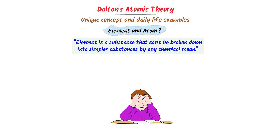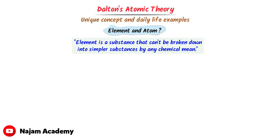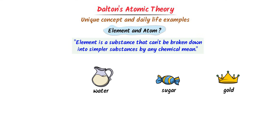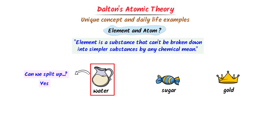Let me teach you a super easy concept. For example, consider water, sugar, and gold. Can we split up water into something else? The answer is yes. We know that the formula of water is H2O. It means that water is made up of two things: hydrogen and oxygen. So we can split up water into hydrogen and oxygen.